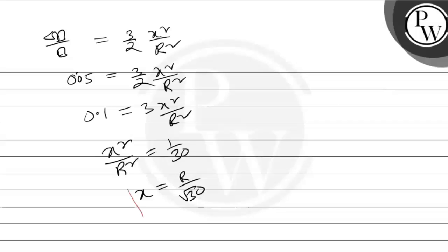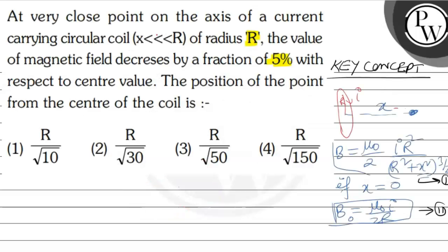So finally, x = R/√30 is the answer. Out of the four options, option 2 is correct. Thank you, good luck.